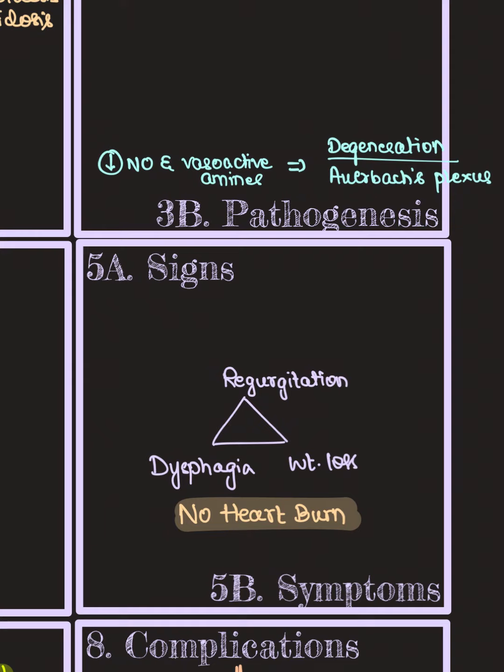Coming to the signs, the three most important signs to remember are the presence of regurgitation, dysphagia, and weight loss. Remember that since there is cardiospasm taking place, the person will not have any heartburn.